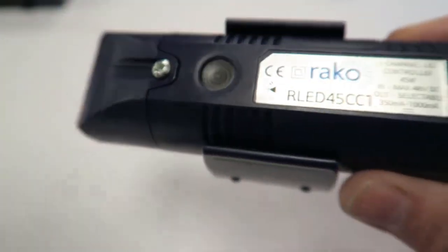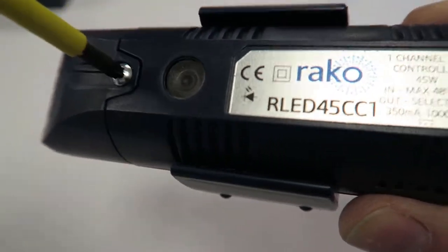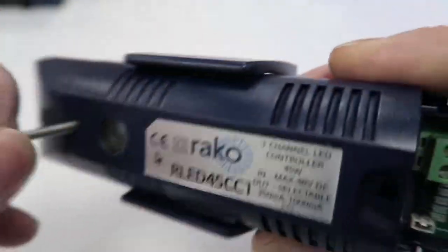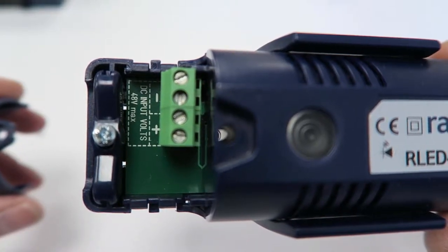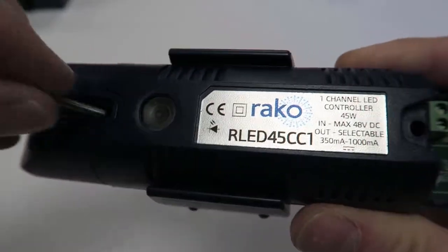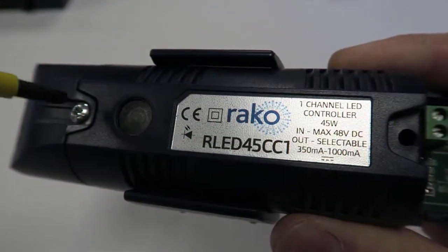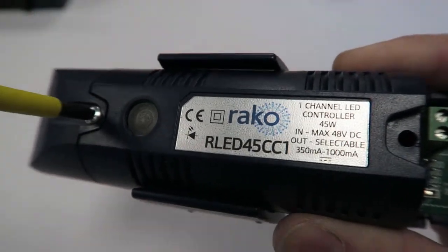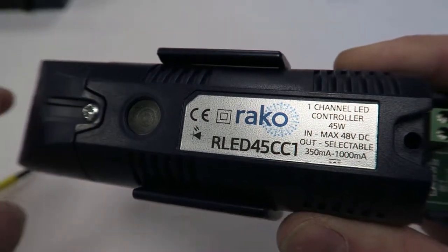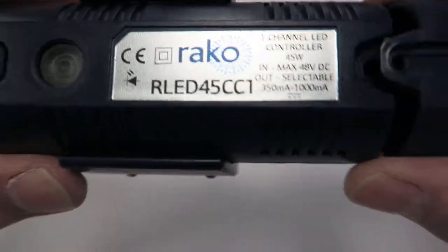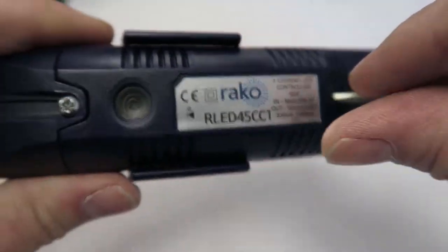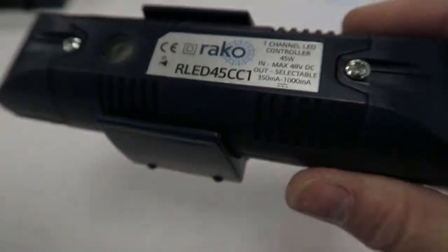There we go, you can see the selection there, 350mA, 500mA, 600mA, 700mA and 1000mA. And there's the output connection to the LEDs. Brilliant piece of equipment. And the DC input is here. There we go, so you can see the 48 volt input there. They also make another version, this is the CC1 constant current one, but they make a version that you can basically run a 24 or 12 volt LED strip from. Exactly the same form factor.